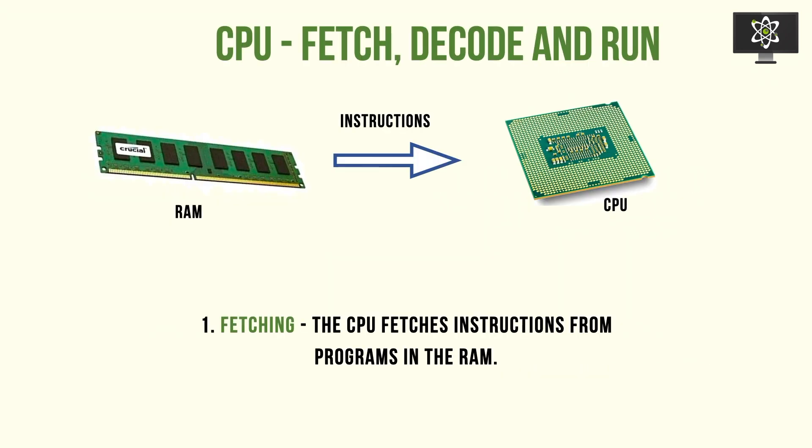Let's look at the CPU cycle: the fetching, decoding, and executing processes. Firstly, the process of fetching involves the CPU fetching instructions from programs in the RAM, a memory location where instructions are stored on a temporary basis. The CPU mainly talks to the RAM to get its input.